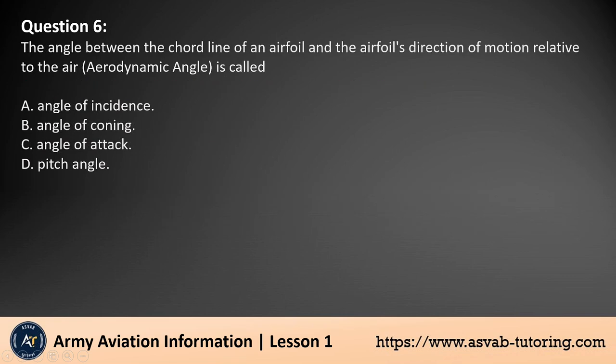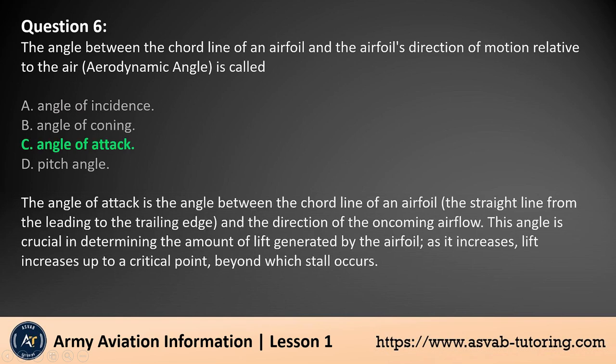Question 6. The angle between the cord line of an airfoil and the airfoil's direction of motion relative to the air (aerodynamic angle) is called: A. Angle of incidence. B. Angle of coning. C. Angle of attack. D. Pitch angle. The answer is C.